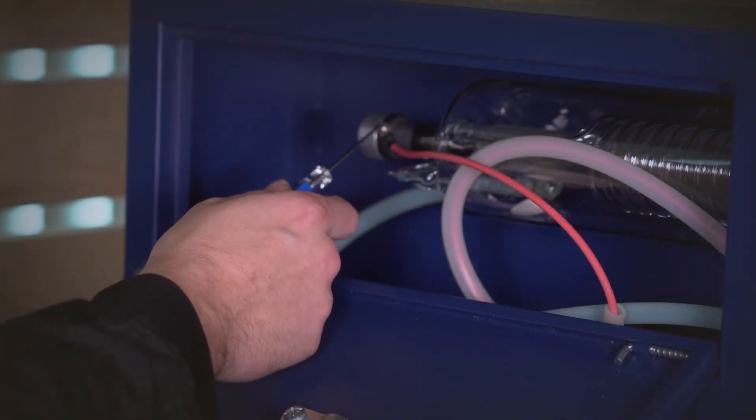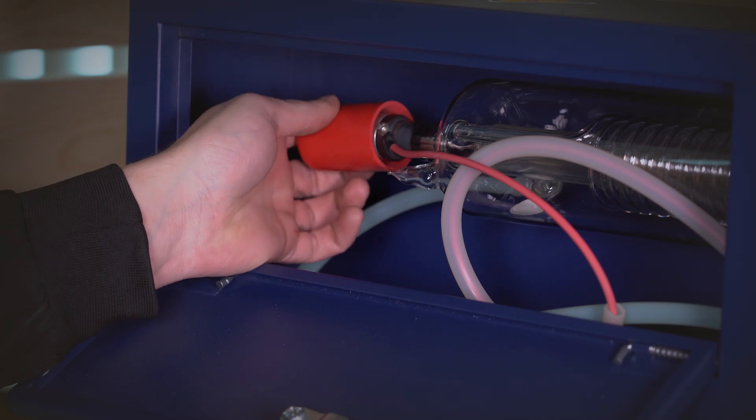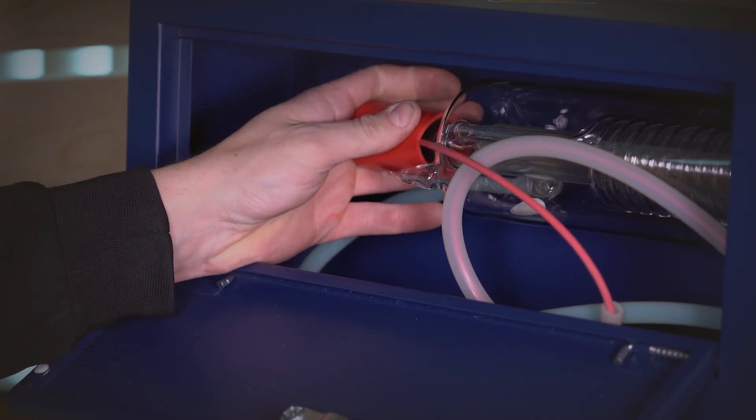Once this wire is tightened up and in place, you want to replace the insulation cap on the end of the tube.